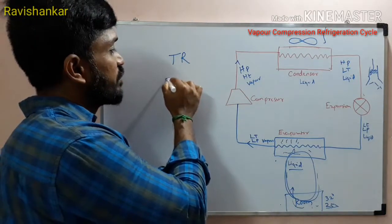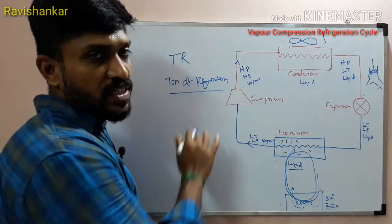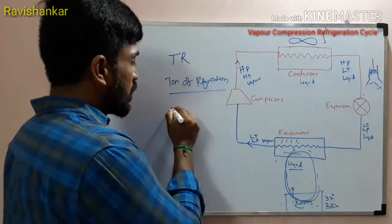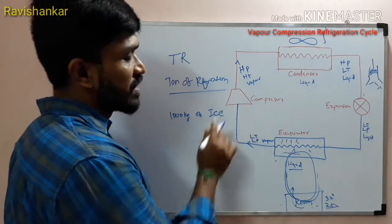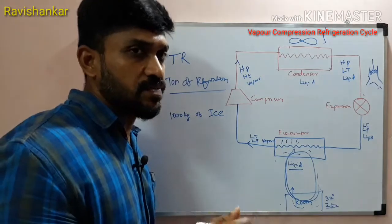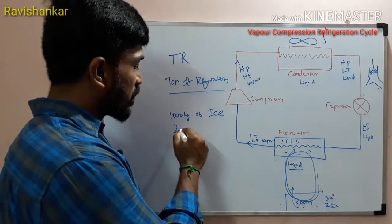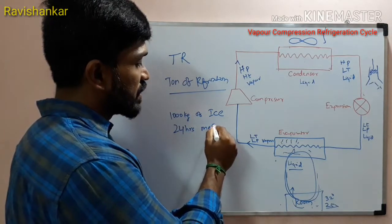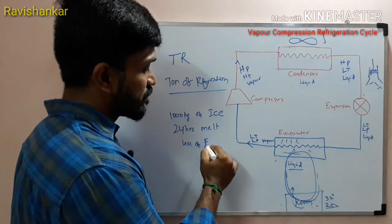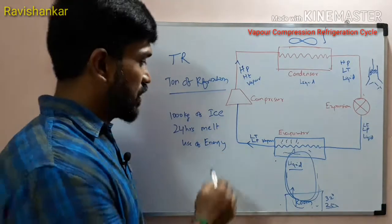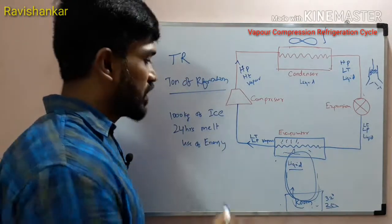TR — ton of refrigeration. This is the abbreviation. Ton is 1000 — 1000 kg of ice. If you melt 1000 kg of ice in 24 hours, the energy used for that is the ton of refrigeration. That is the refrigeration effect — 1000 kg of ice melted in 24 hours defines 1 TR.